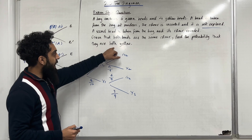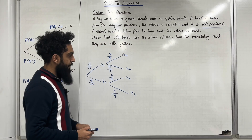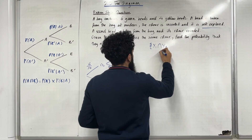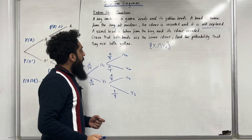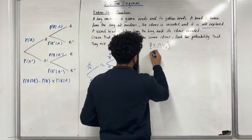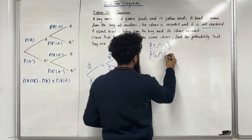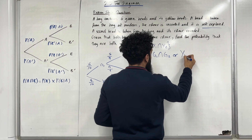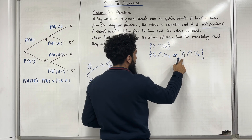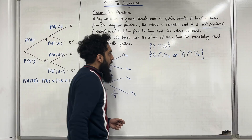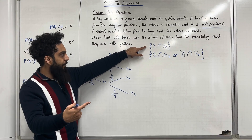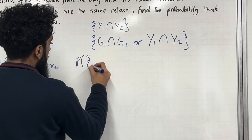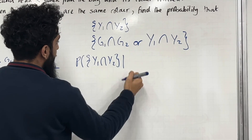Now I want to work out the probability that they are both yellow given that both beads are the same colour. Both beads being yellow represents the set Y1 and Y2, or Y1 intersect Y2. Both beads being the same colour represents the set G1 and G2 — the first pick is green and the second pick is green — or Y1 and Y2. So we want to work out the probability of both beads being yellow given that both beads are the same colour.